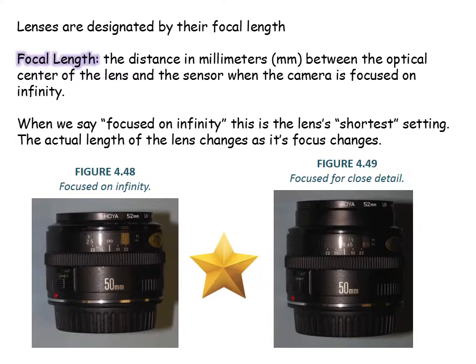Here's the definition I'd like you to know. Focal length is the distance in millimeters between the optical center of the lens and the sensor when the camera is focused on infinity. When we say focused on infinity, that's when the lens is basically at its shortest. The actual length of the lens changes as its focus changes. Figure 4.48 in your textbook shows a 50mm lens focused on infinity — that is basically the shortest setting. If you measured it, it would be 50mm.